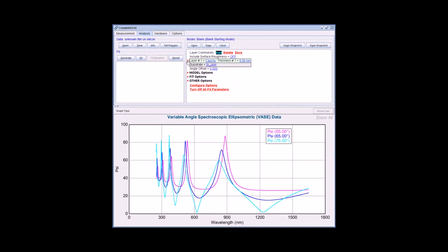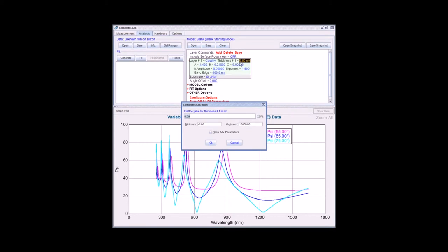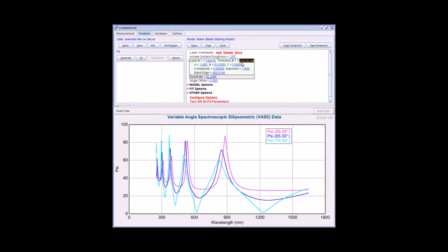After the Cauchy layer is entered, you can click the plus sign to expand the layer. You'll see A, B, and C values. These are the Cauchy coefficients that are used to describe the shape of index versus wavelength. You can enter a starting thickness value by clicking on the thickness here.